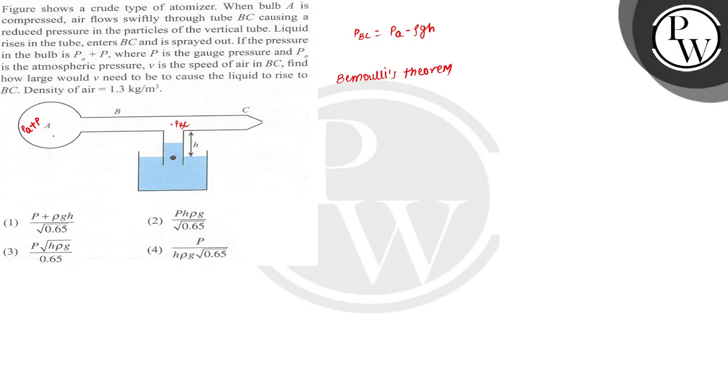Here we assume that velocity V was 0, V equal to 0, and here the velocity is V. So here 0 and here V, so we can write PA plus P equal to PBC